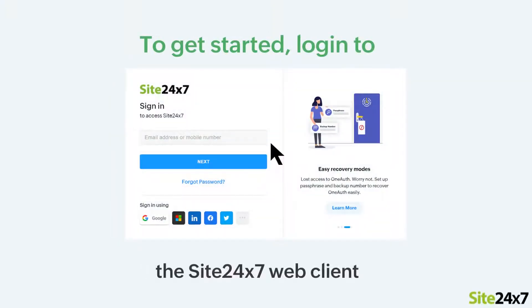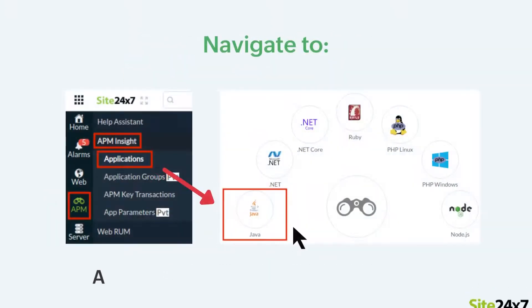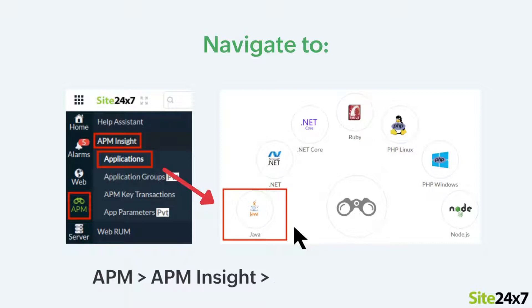To get started, login to the Site24x7 web client. Now, navigate to APM, APM Insight, Applications and click the Java icon.